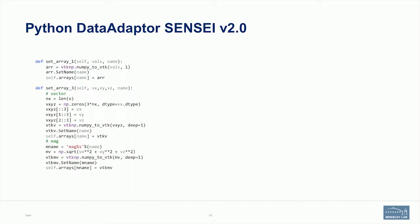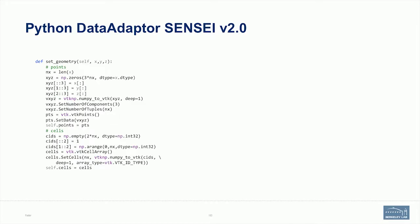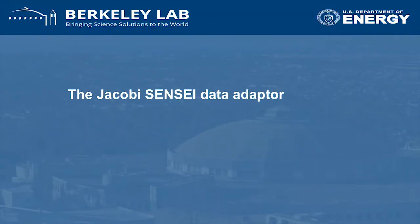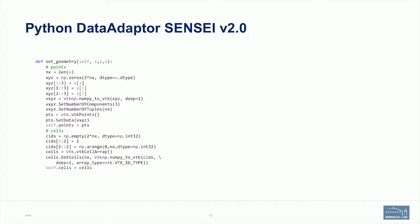These are the functions that create the VTK stuff and cache the points and cells. That's what the data adapter looks like for a pure Python solution if you wanted to do a pure Python data adapter.